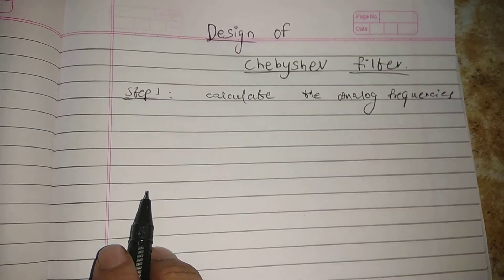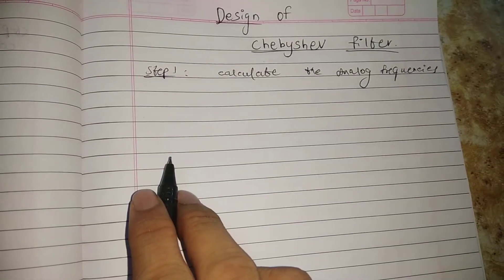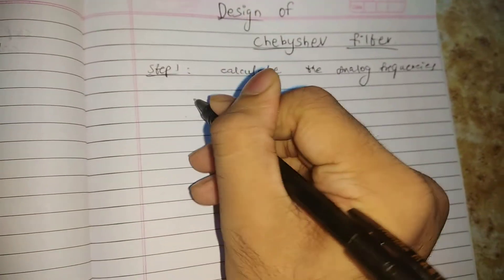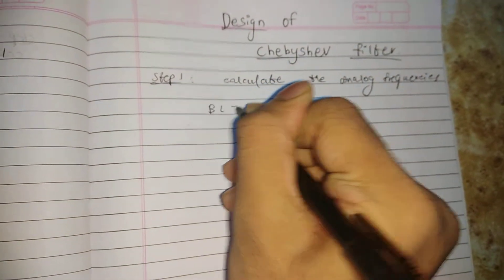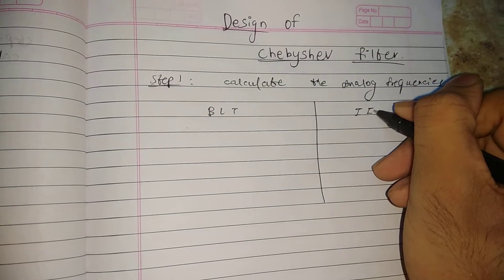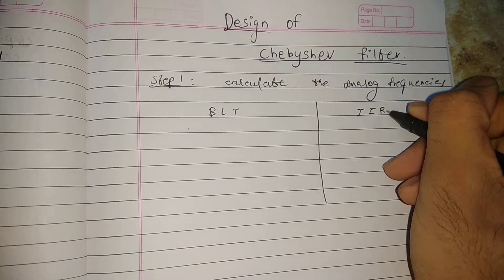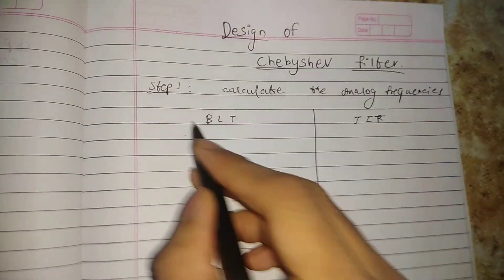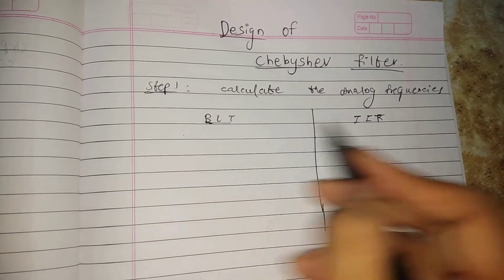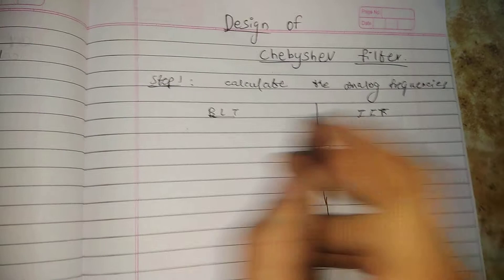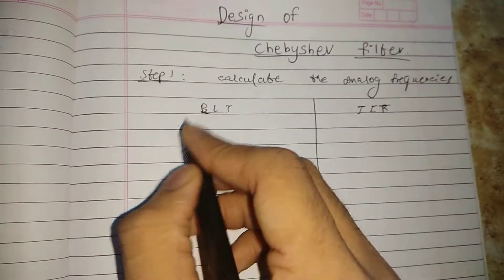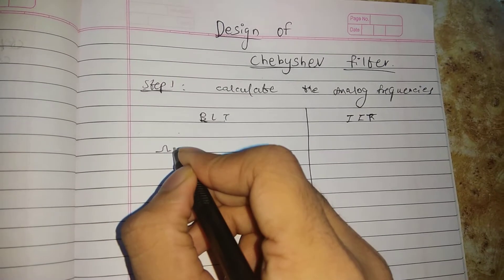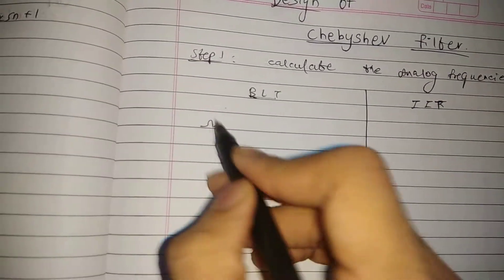In step one, to calculate the analog frequencies, you have two methods. One is bilinear transformation, abbreviated as BLT, and the other is impulse invariant transformation, abbreviated as IIT. Let's discuss the formula for bilinear transformation.